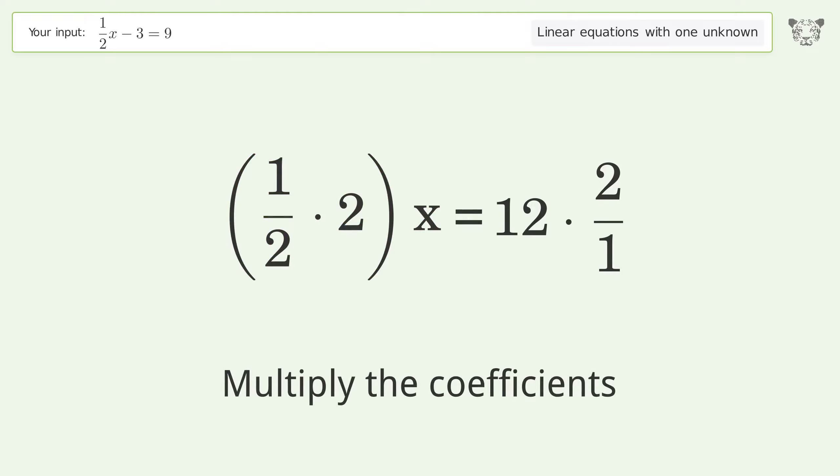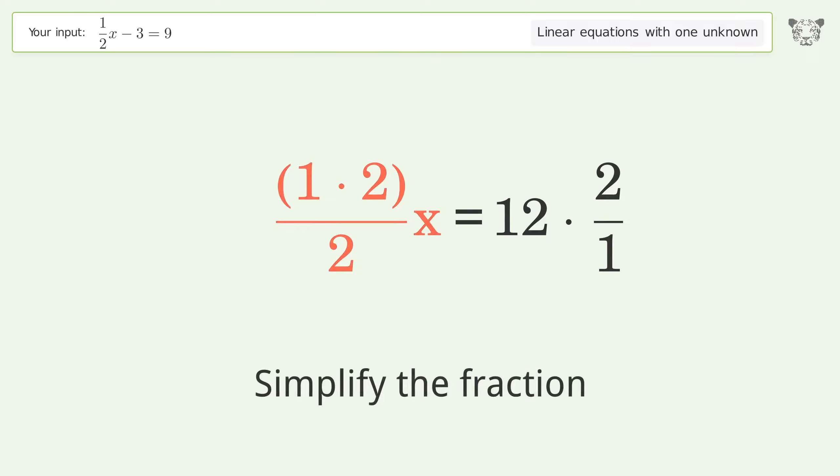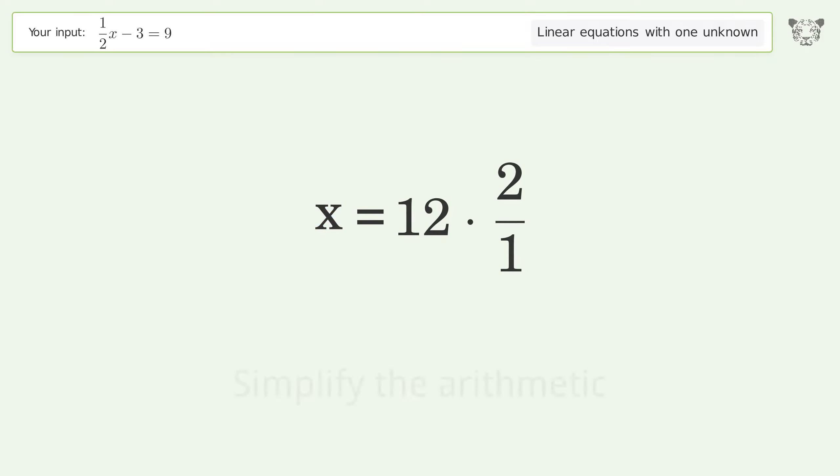Multiply the coefficients. Simplify the fraction. Simplify the arithmetic. And so the final result is x equals 24.